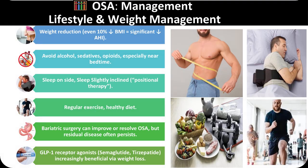Lifestyle modification plays a crucial role in managing obstructive sleep apnea, particularly through weight reduction, as even a 10% decrease in body weight can significantly lower apnea severity. Patients should avoid alcohol, sedatives, and opioids, especially before bedtime, as these substances relax airway muscles and worsen obstruction. Positional therapy, such as sleeping on the side or with slight head elevation, helps prevent airway collapse. Regular physical activity and a balanced diet support overall respiratory health and weight control. Bariatric surgery can substantially improve or resolve sleep apnea in obese individuals, and GLP-1 receptor agonists like semaglutide and tirzepatide are emerging as effective pharmacologic options for weight loss, indirectly improving OSA outcomes.